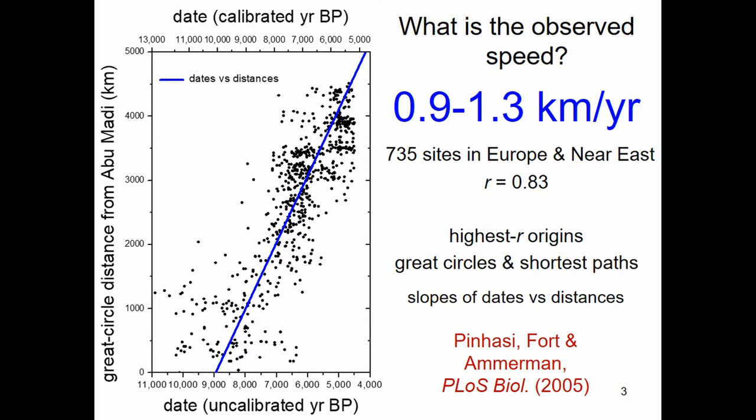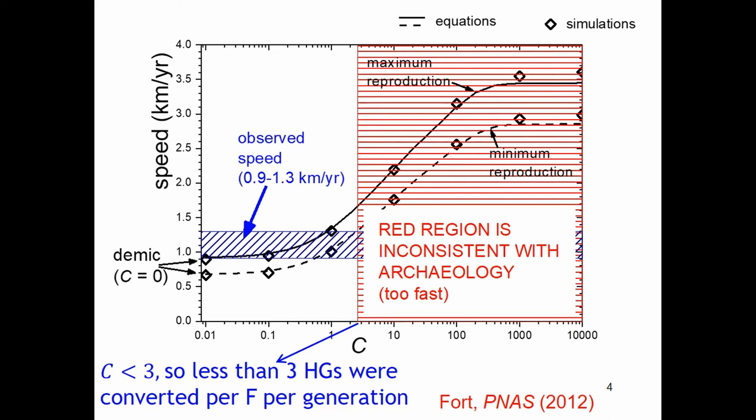The spread of the Neolithic, according to the regression of dates and distances, was between 0.9 and 1.3 kilometers per year. We show this range as the blue rectangle in this slide, where the vertical axis is the speed of the Neolithic wave of advance.